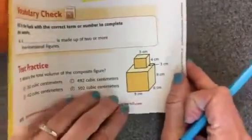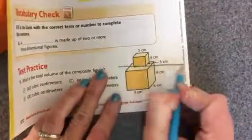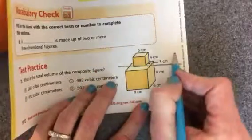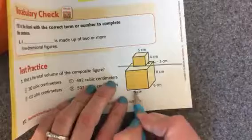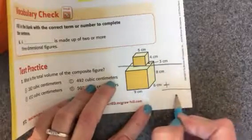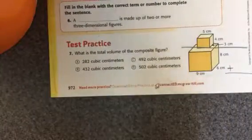What is the total volume of this composite figure? I'm going to split it into two pieces. Multiply these three numbers and write my number here. Multiply these three numbers and put my number here. And then add them together and choose the correct answer.